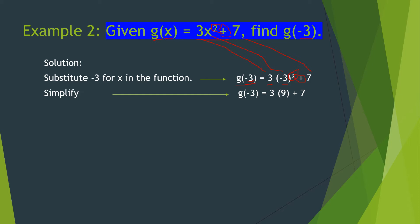Next, we simplify the right side of the equation. Negative 3 squared is negative 3 times negative 3, which is equal to 9. So we have 3 times 9, which becomes 27, plus 7. Therefore, g at negative 3 is equal to 34.